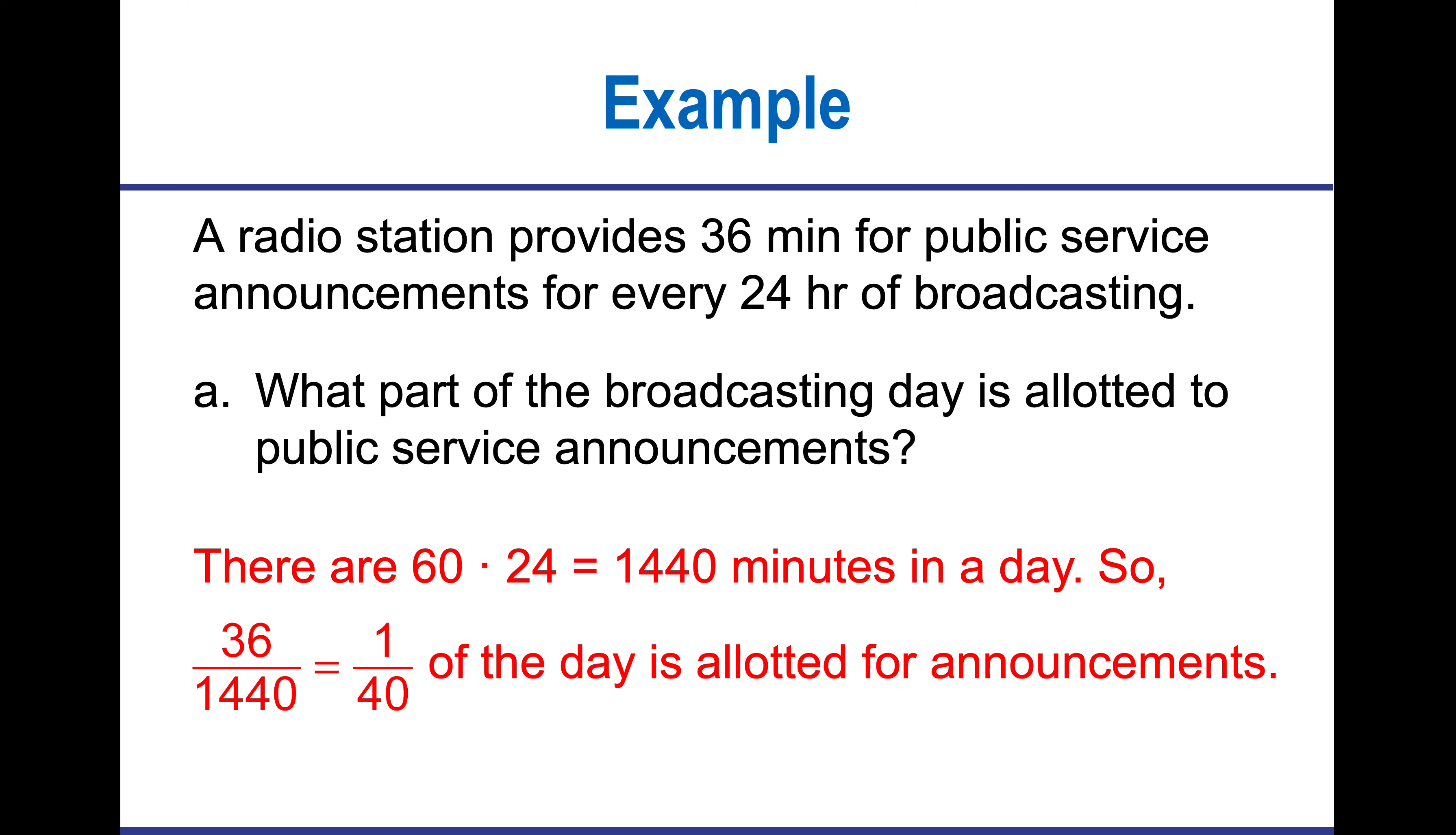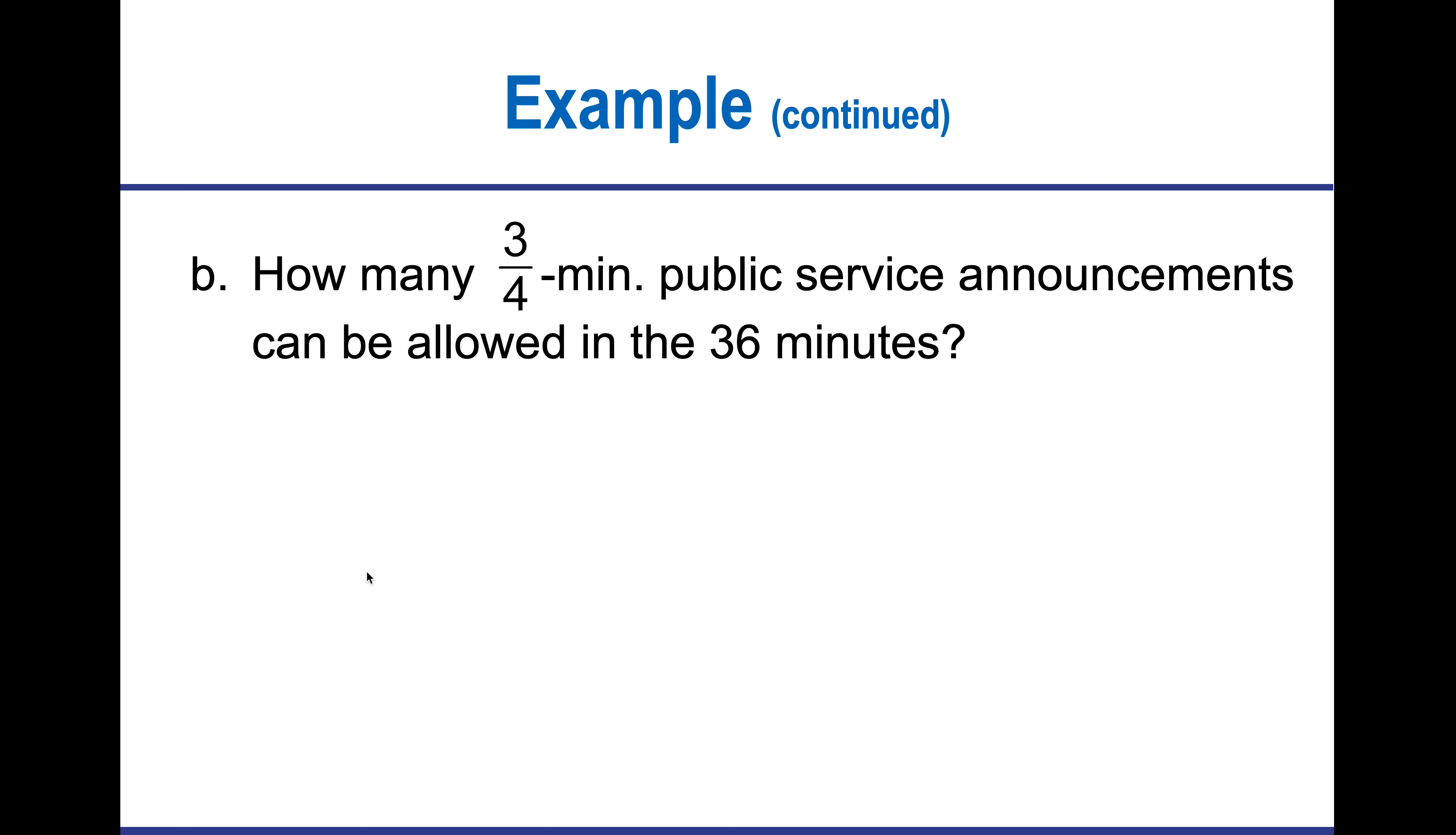What does this actually look like? If I have 1440 minutes in a day found from doing 60 minutes times 24 hours, that gives me 36 over 1440, or 1 fortieth of the day when I reduce it. Now, how many three-quarter minute public service announcements can I make in 36 minutes? I have 36 divided by 3 fourths. I'm going to change it to multiplication, then I'm going to use the reciprocal and multiply straight across.